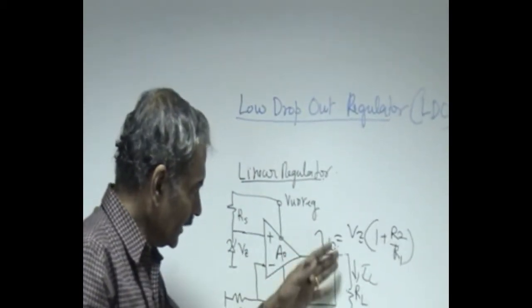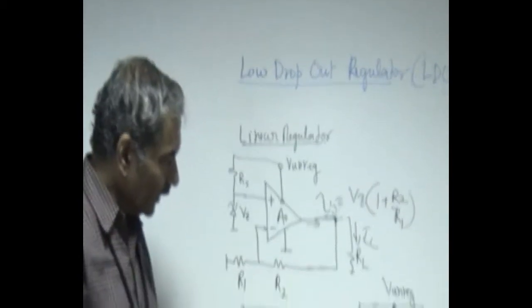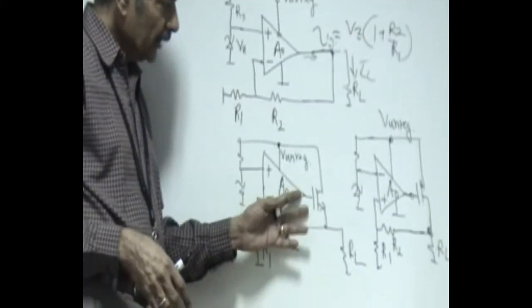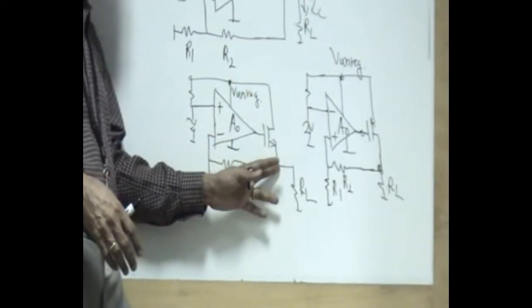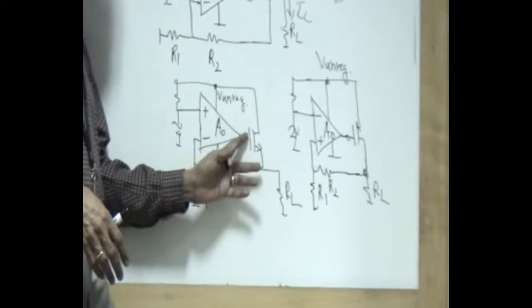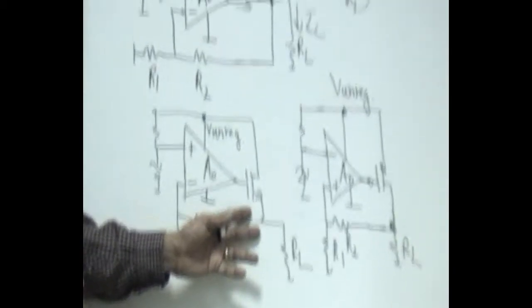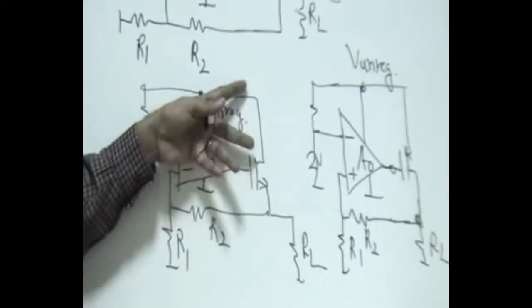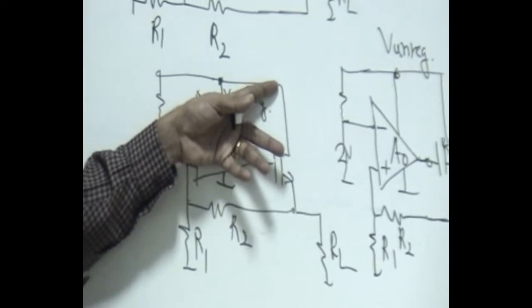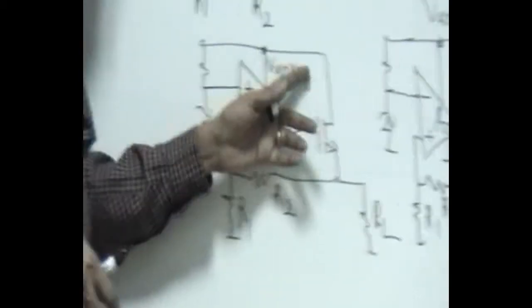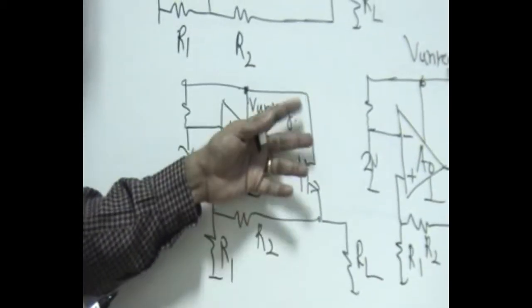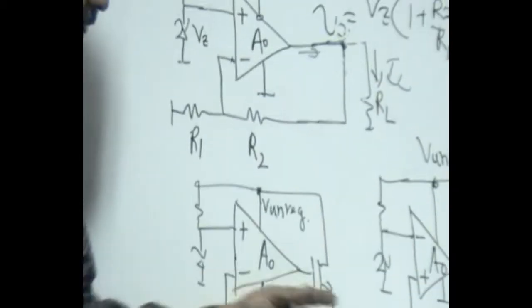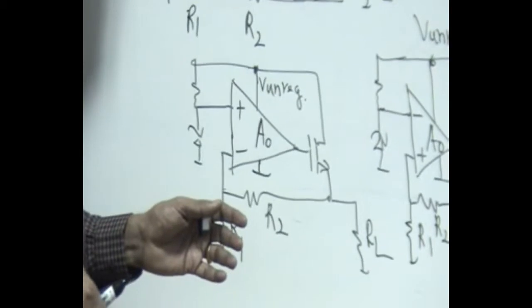So this gets converted to a high current operation by putting a current amplifier in the load. The output still remains the same as before. The only thing is, because of putting this n-channel MOSFET here, the minimum unregulated voltage up to which this becomes functional keeps increasing.